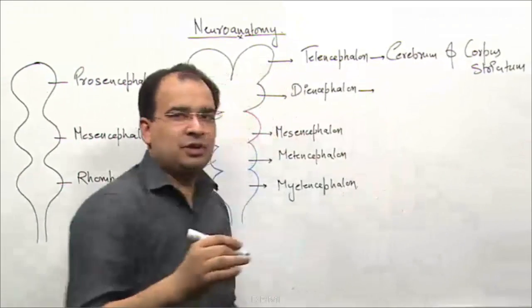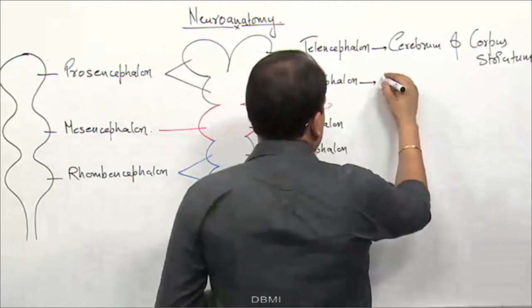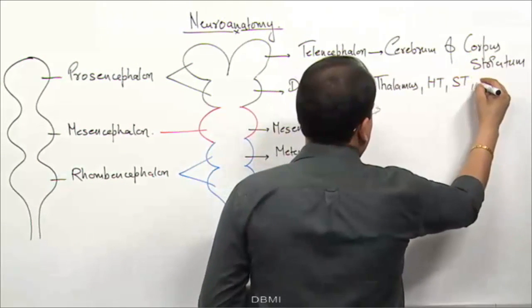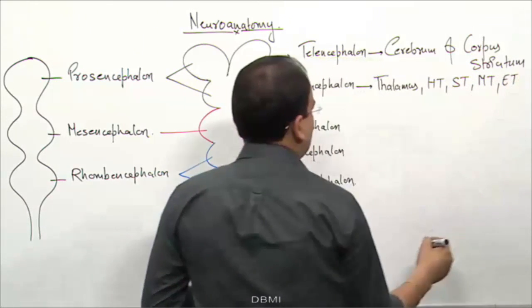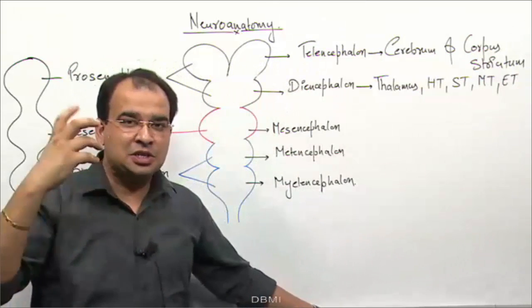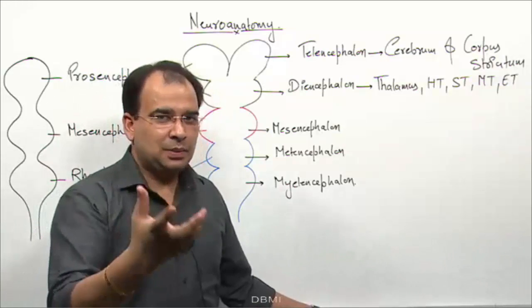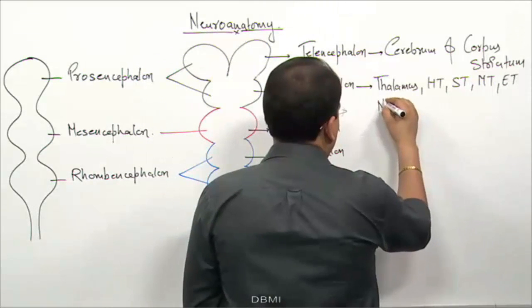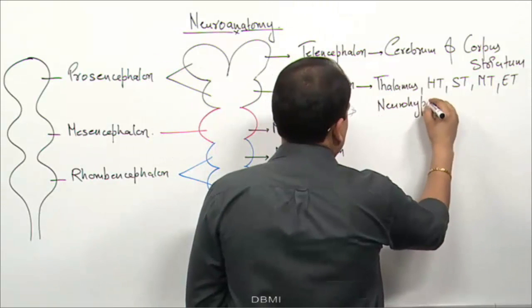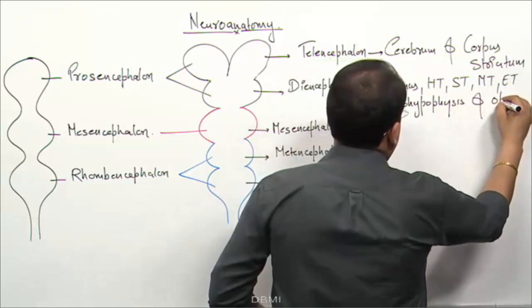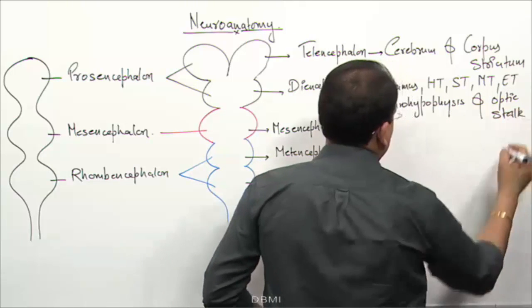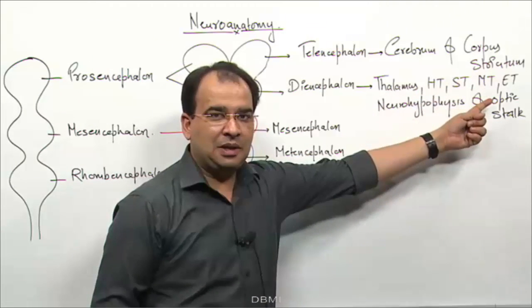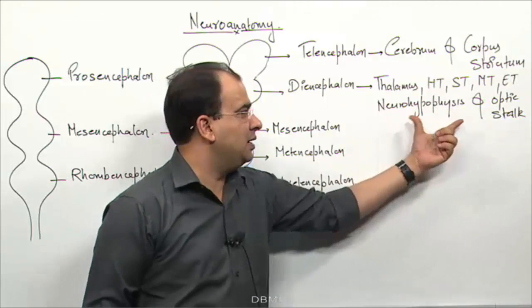The diencephalon will form all kinds of thalamus structures. The diencephalon will give rise to the thalamus, hypothalamus, subthalamus, metathalamus, and epithalamus. Additionally, two structures considered extensions of the diencephalon are the neurohypophysis — the posterior lobe of the pituitary — and the optic stalk, which gives rise to the optic nerve.